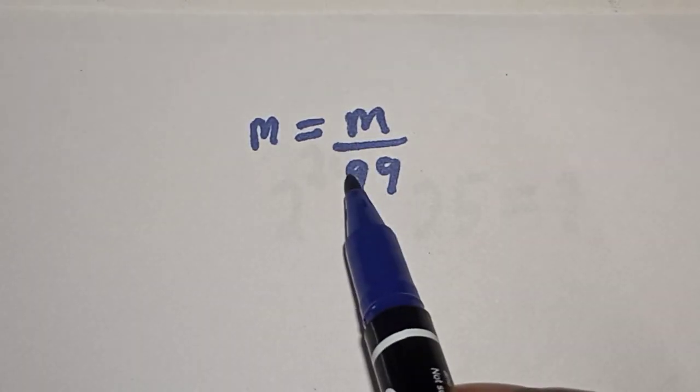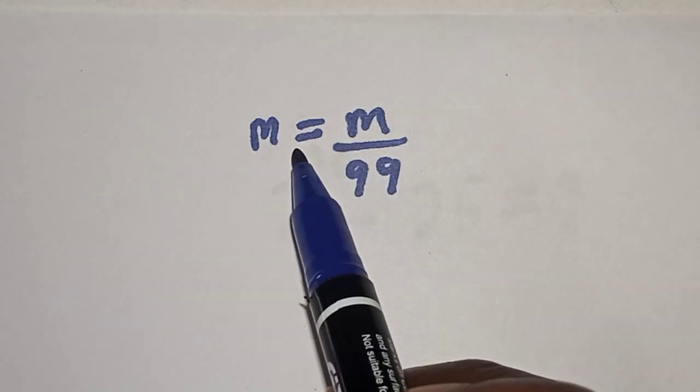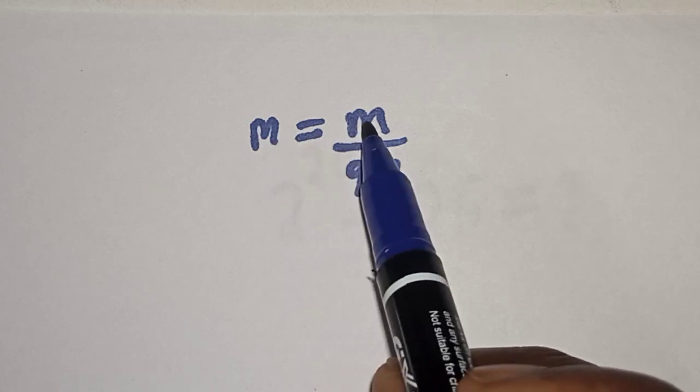Hello, welcome to Magist. In this class, we want to find the value of M from this equation: M equals M over 99.